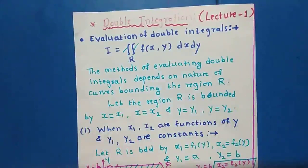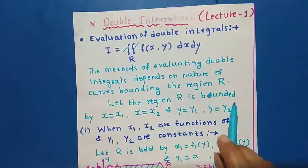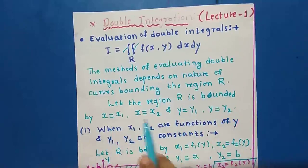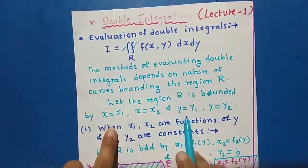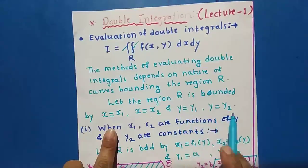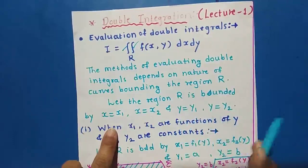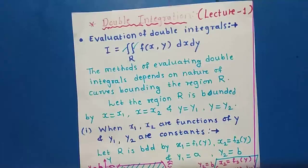Suppose our region R is bounded by x = x1 and x = x2 — these are the limits of x — and y = y1 and y = y2, which are the limits of y. There are two possibilities: either the limits of x are functions of y, or the limits of y are functions of x.